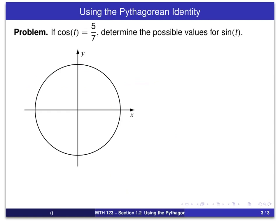Remember that cosine of t is the x coordinate and we're saying that that's 5 sevenths. So approximately right there.